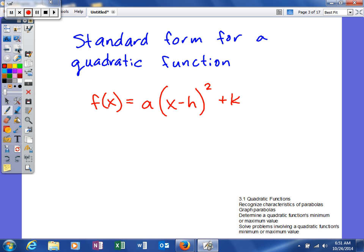H is going to cause your graph to move left or right. It's a horizontal shift, and k is going to move your graph up or down. Which brings us to the next thing, which is called your vertex. Whenever you have a standard form of a quadratic equation, your vertex is going to be the ordered pair (h, k).